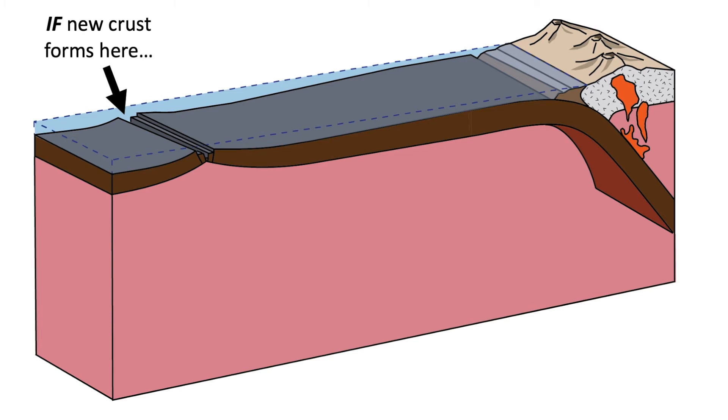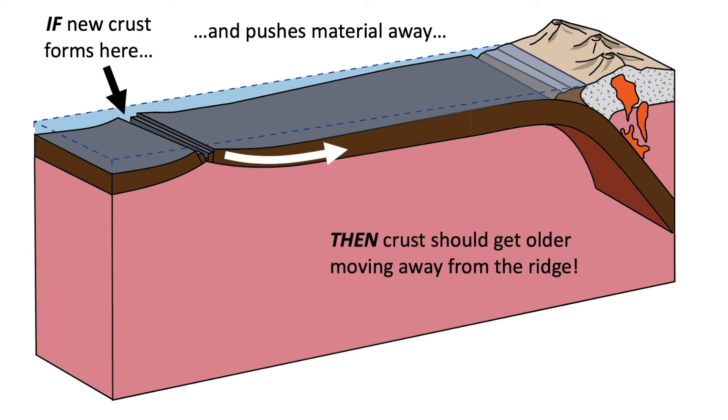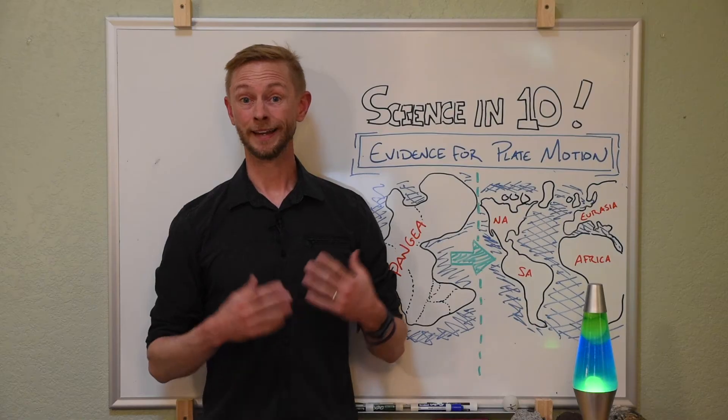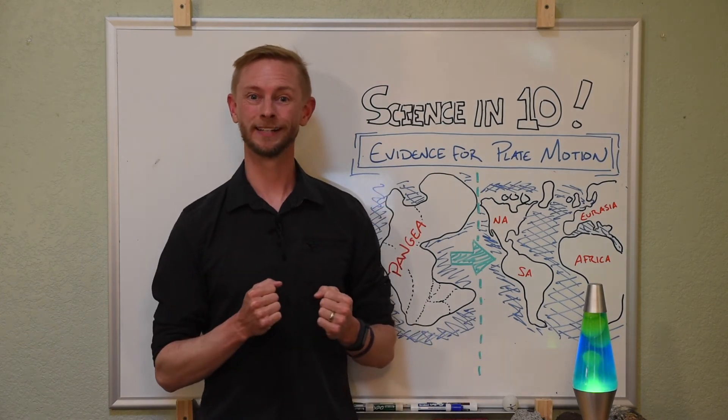If the mid-ocean ridges are a source of new crust, and as the new crust forms it pushes the old crust laterally away from the ridge, partially driving plate motion, then the further one gets from the ridge, the older the crust should be. It turns out that is exactly what we see.